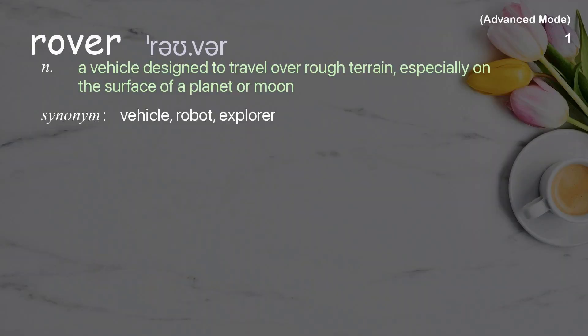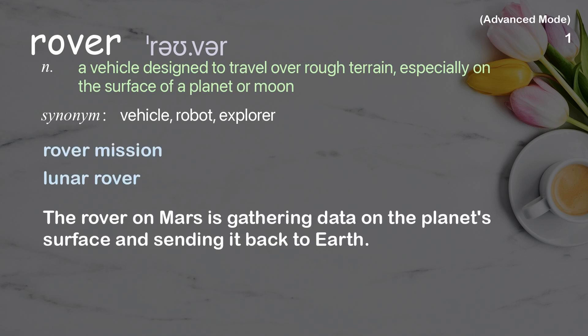Rover: A vehicle designed to travel over rough terrain, especially on the surface of a planet or moon. Examples: Rover mission, Lunar rover. The rover on Mars is gathering data on the planet's surface and sending it back to Earth.